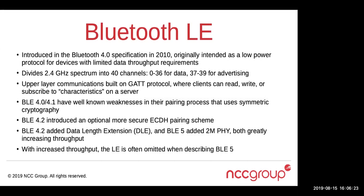In Bluetooth 4.0 and 4.1, the pairing process was rather weak — it used a symmetric key exchange for establishing the long-term key, and there have been attacks published against it. In Bluetooth 4.2, there was a new, more secure pairing process based on the elliptic curve Diffie-Hellman key exchange, which prevented the old attacks that a passive sniffer could do. Bluetooth 4.2 also added data length extension, which extended the maximum size of a message from around 30 bytes to a full 255 bytes, greatly improving efficiency and throughput.